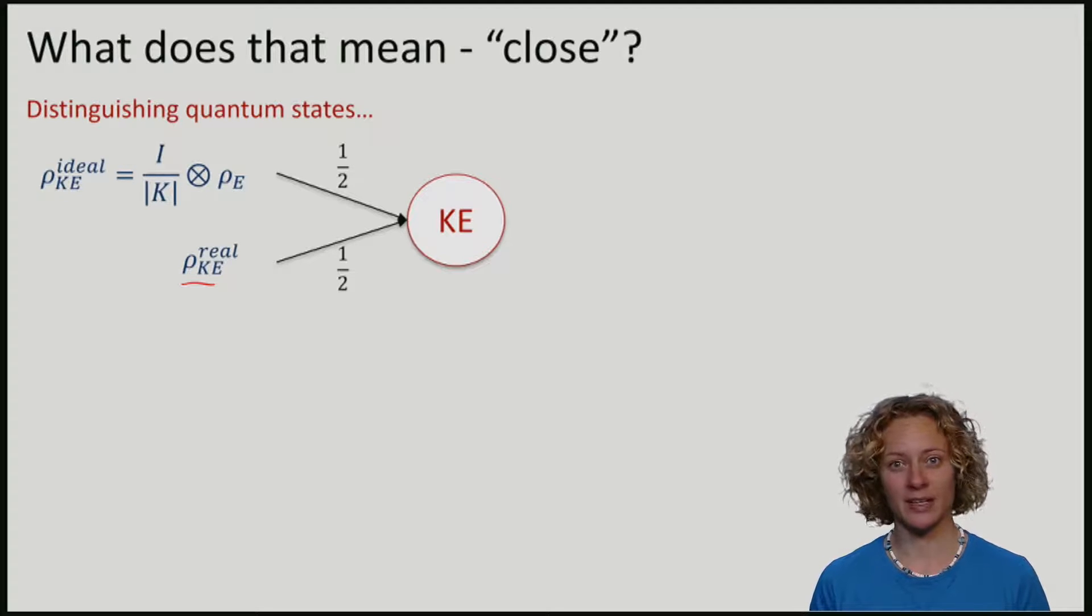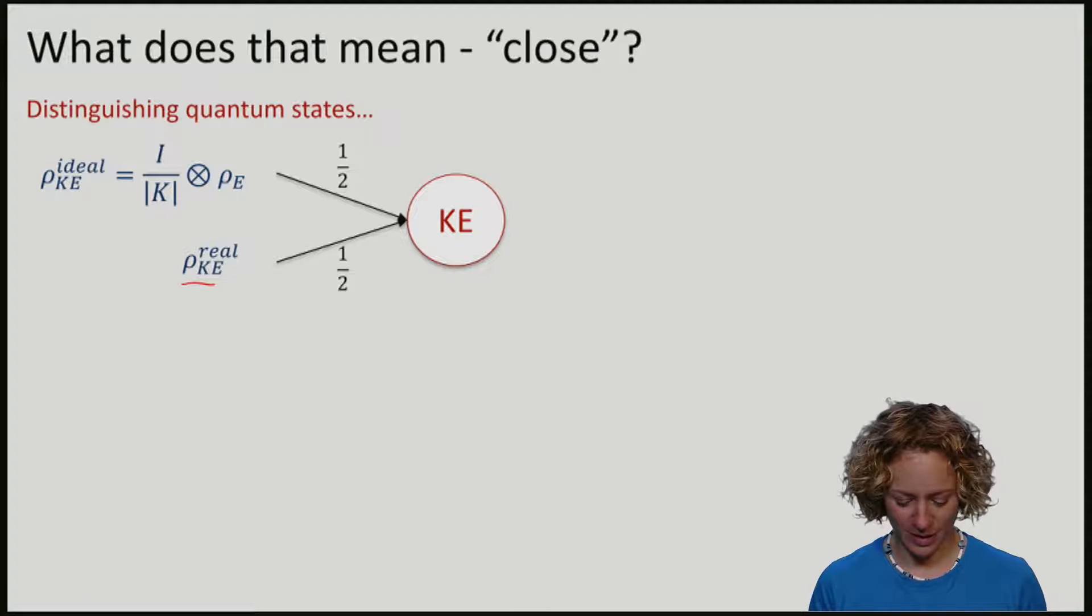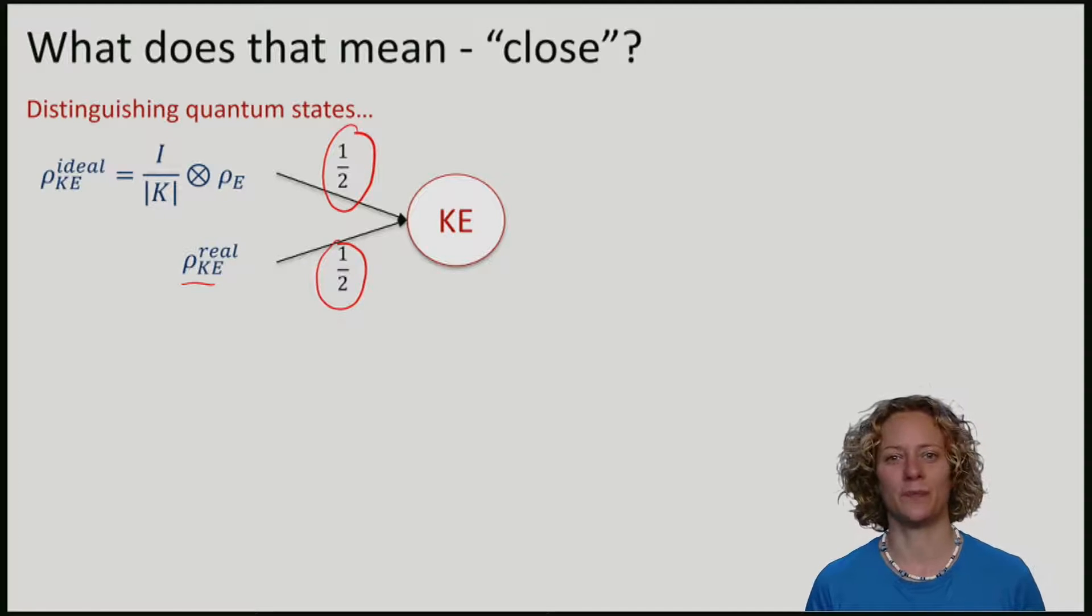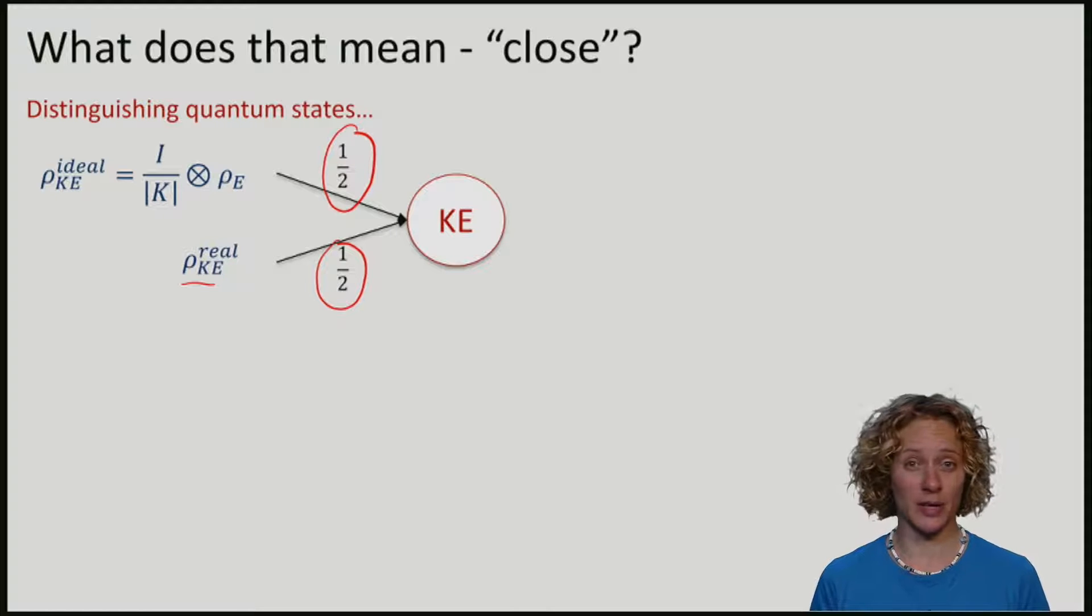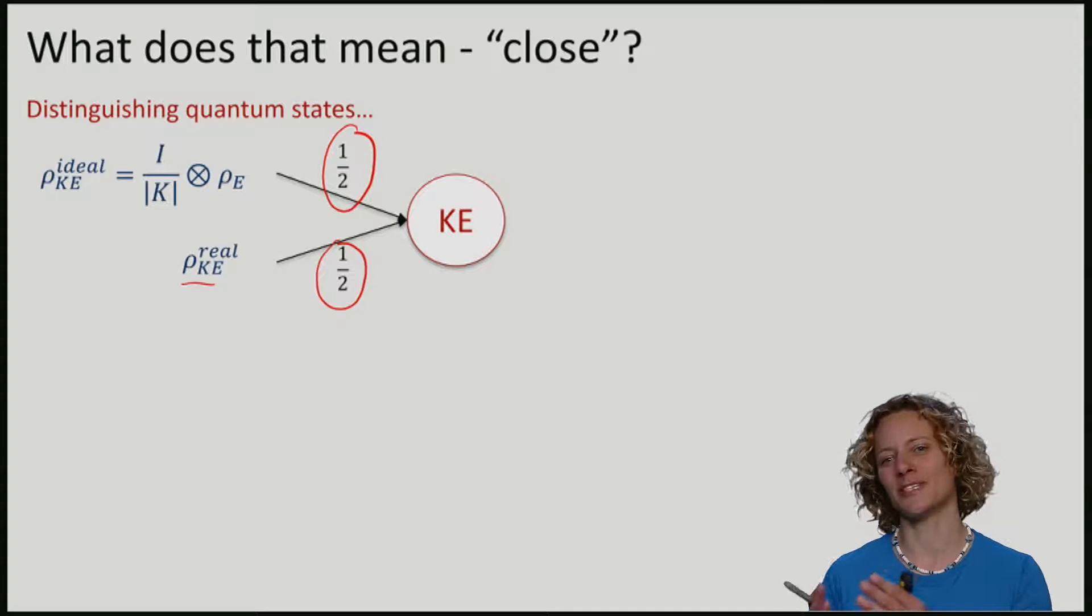Let's say that you have actually no idea whether I used the ideal or the real protocol. For purpose of illustration, let me assume that I choose to run the real one with probability half, and the ideal one also with probability half. So, we are now in a situation where the combined system KE is with probability half in the ideal state, and probability half in the real state.